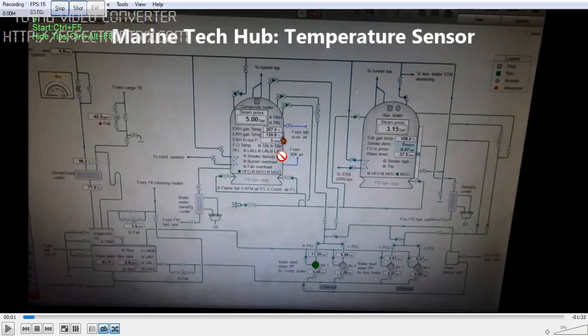So one important thing which you should understand is that when you are changing the sensor, you should put the range correctly. So in the computer you have to put the range 0 to 500. That is the range of the temperature sensor. But in case you put it 0 to 450, that time you will get a wrong reading here.